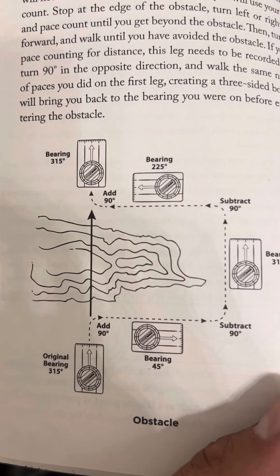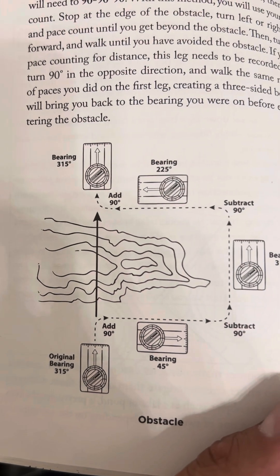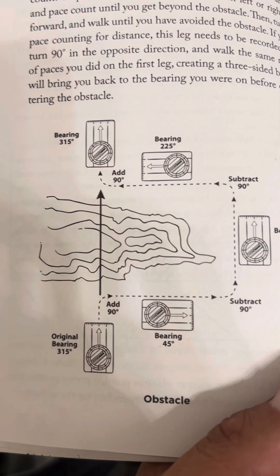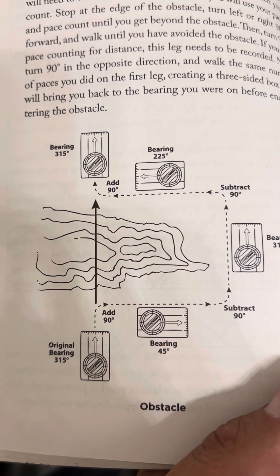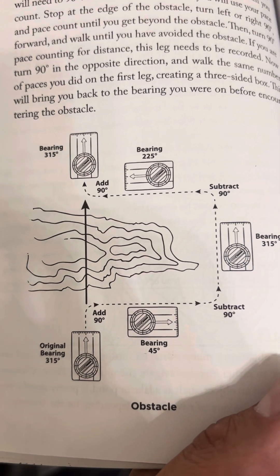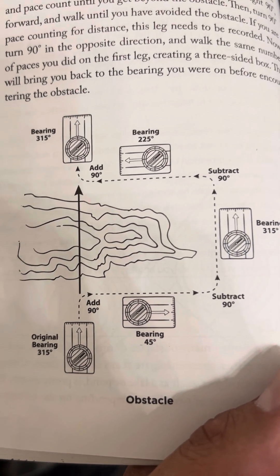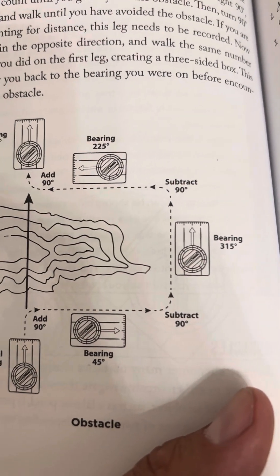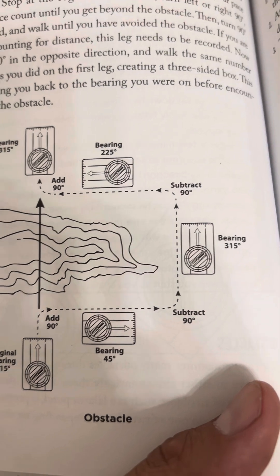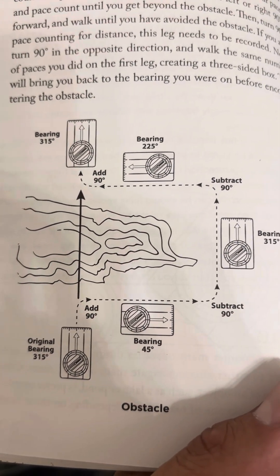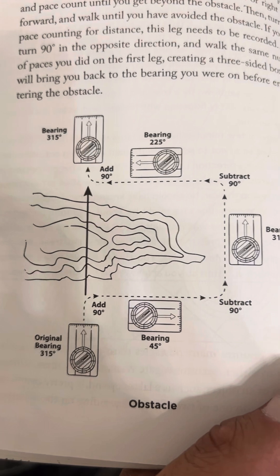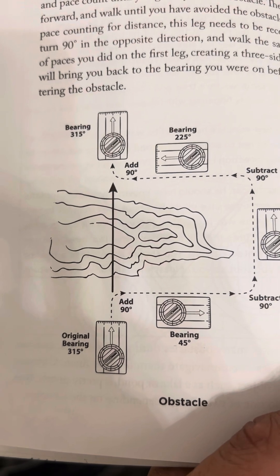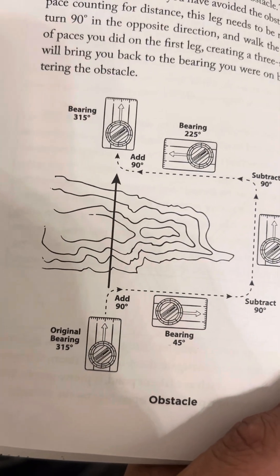The diagram shows the obstacle and the original bearing. It shows adding 90 degrees, bringing the bearing to 45 degrees, then subtracting 90 degrees so the bearing is at 315 degrees, then subtracting 90 degrees again so the bearing is at 225 degrees, and finally adding 90 degrees so your bearing is back to the original 315 degrees after you've gotten past the obstacle.